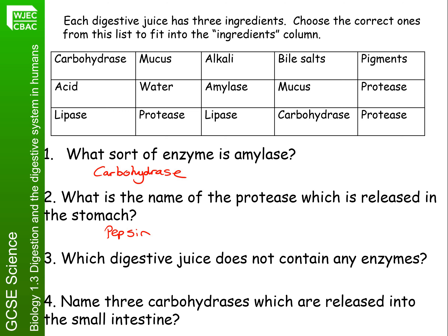Which digestive juice does not contain any enzymes? Looking at the table, you can see that it is bile. And name three carbohydrases which are released into the small intestine — this may have needed a little bit of research. The first one is amylase. But you would also have sucrase, which breaks down the sugar sucrose into glucose and fructose, and lactase, which breaks down lactose into glucose and galactose.